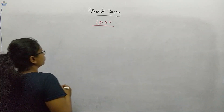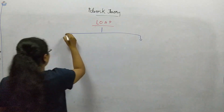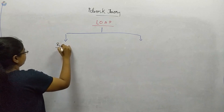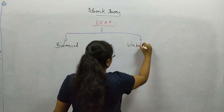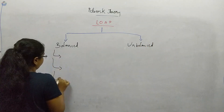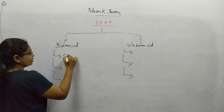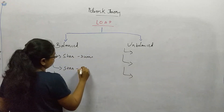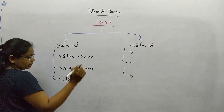On the load side, we have two categories: one is balanced load and the second one is unbalanced. In each of these two classifications, we have three more classifications related to star and delta: star connection with three-wire system, star connection with four-wire system, and delta connection.